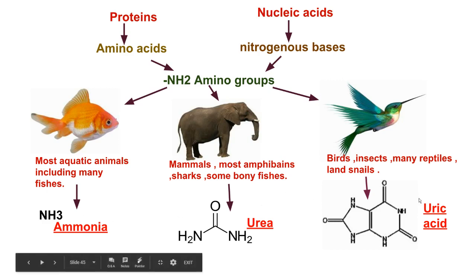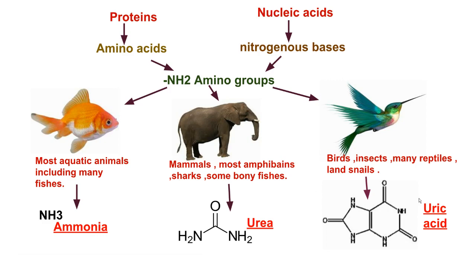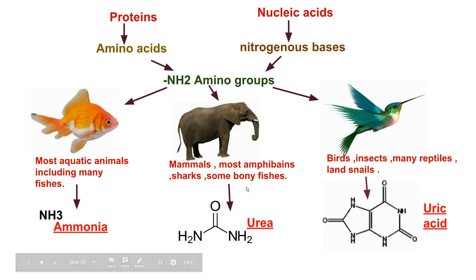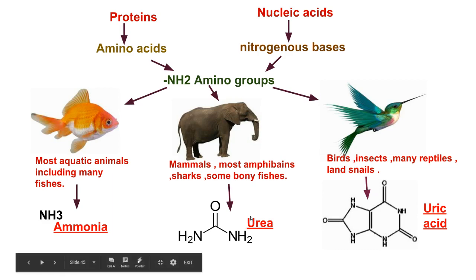Animals inhabiting environments with acute shortage of water produce excretory products requiring minimum water. Birds and reptiles in arid environments excrete uric acid, which requires only 1 ml of water to eliminate 1 gram of nitrogen. In restricted water supply, ammonia is converted into the less toxic substance urea, which requires 50 ml of water per gram of nitrogen removed. Mammals, amphibians, sharks, and some bony fishes metabolically convert ammonia to urea via the urea cycle.